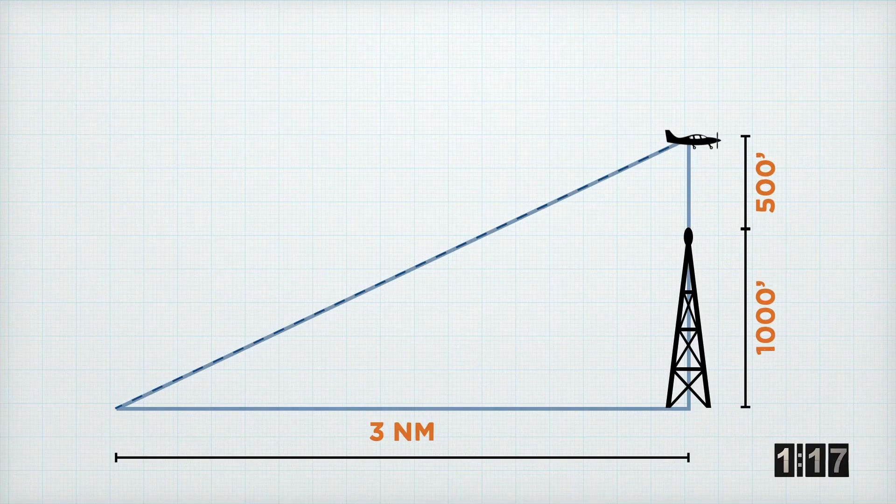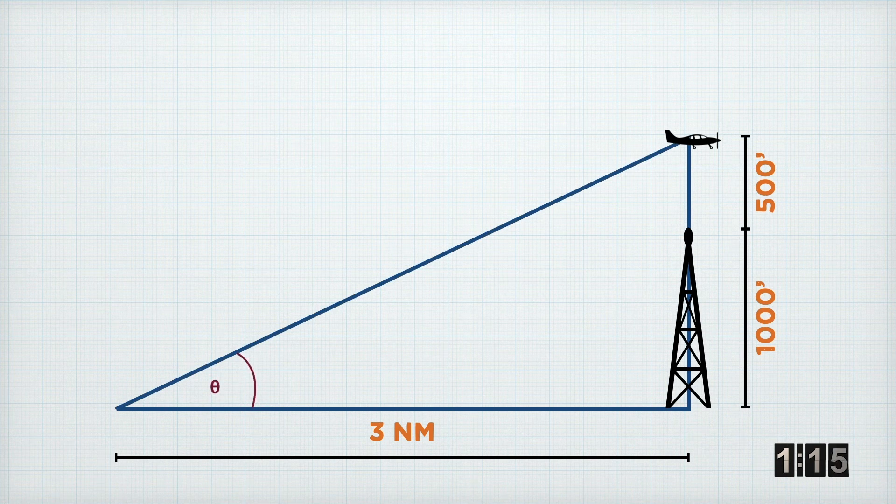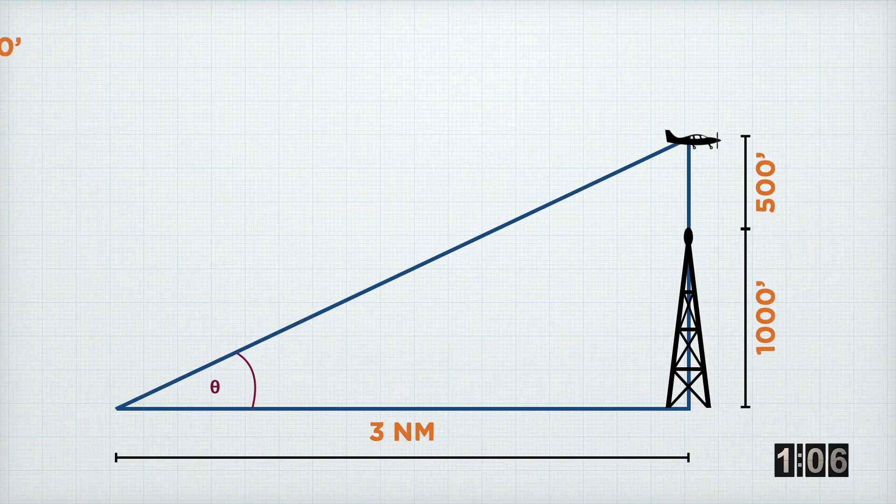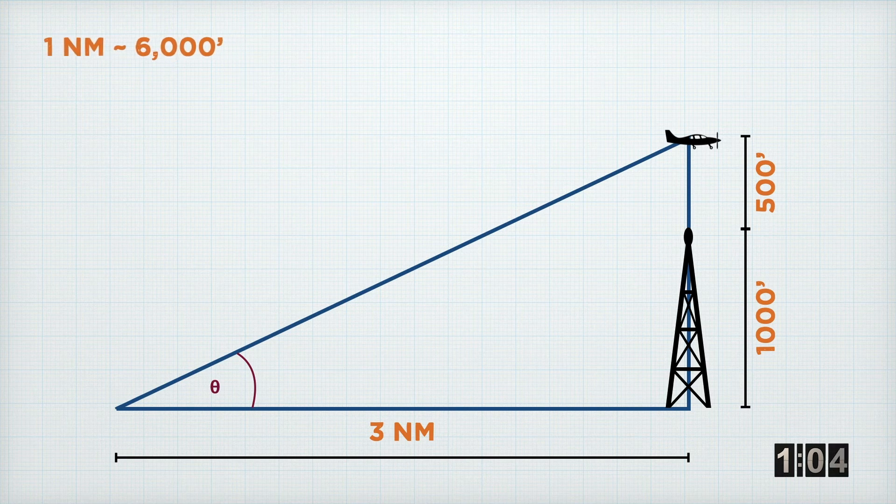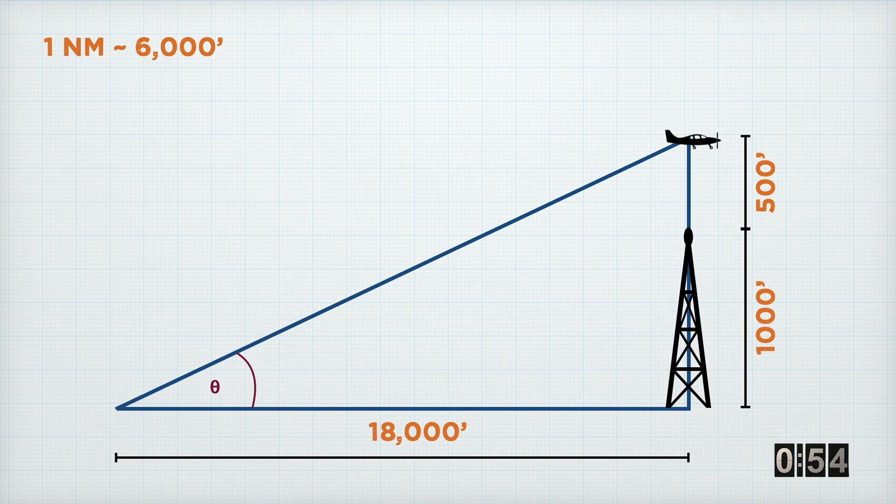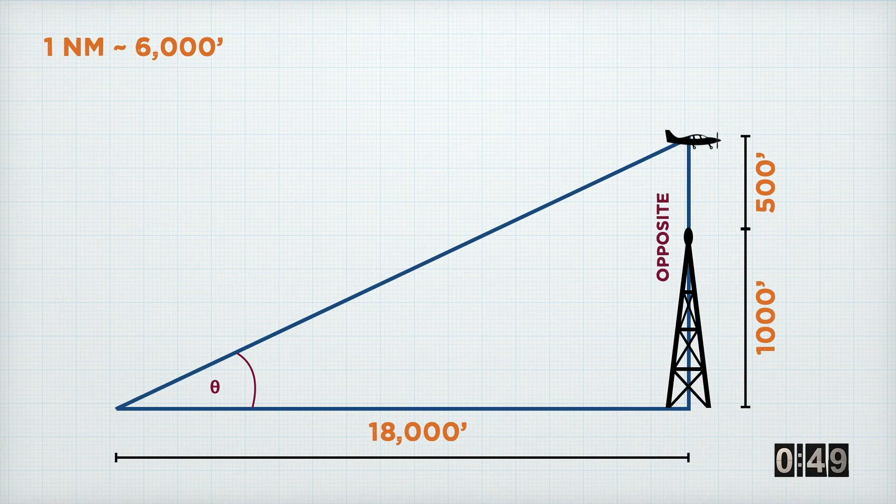Unsurprisingly, we can look at this as a triangle, but you'll notice that we've got nautical miles on the bottom and we've got feet on the side of the triangle. Now, very, very roughly speaking, we can say that one nautical mile is equivalent to 6,000 feet. So we can take our three nautical miles, multiply it by 6,000 feet per nautical mile, and we end up with 18,000 feet along the bottom of our triangle.